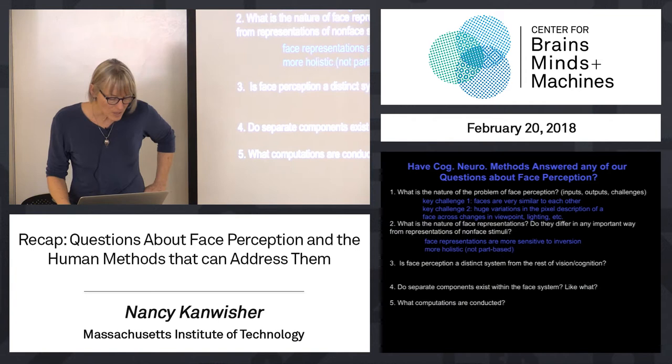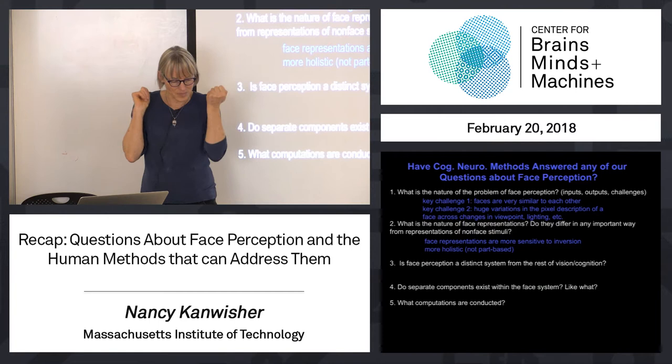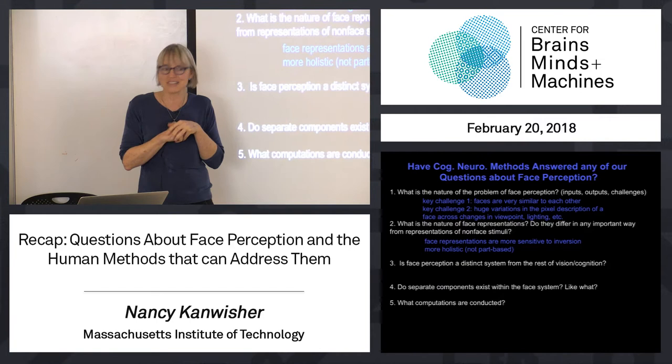We also learned that faces are processed in a more holistic way. There are basically two kinds of evidence: the composite effect and the part-whole effect, both of which show that when you process a face, your system wants to deal with the whole face at once and is not very good at encoding individual parts.